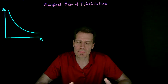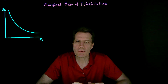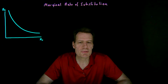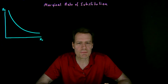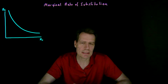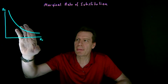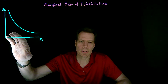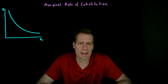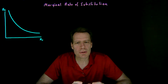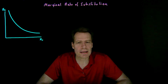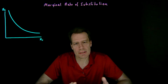We've now derived the idea of an indifference curve — a set of bundles that you're indifferent between. We've seen that indifference curves are going to slope down because of the monotonicity assumption, and they're going to bend towards the origin because of the convexity assumption. We now want to take a closer look at that indifference curve, and in particular at the slope of the indifference curve.